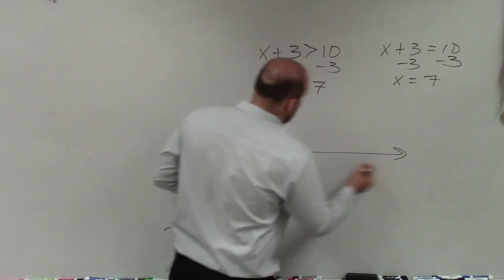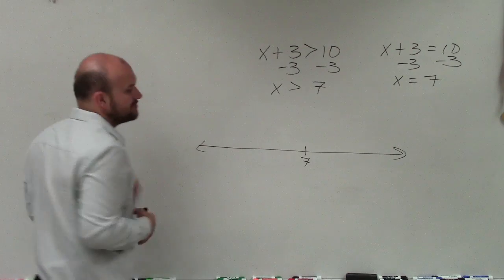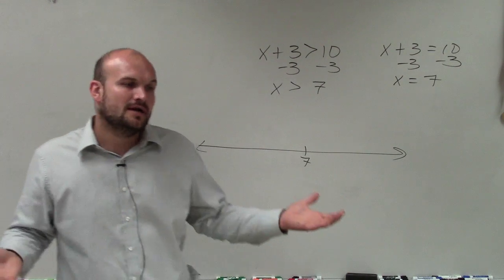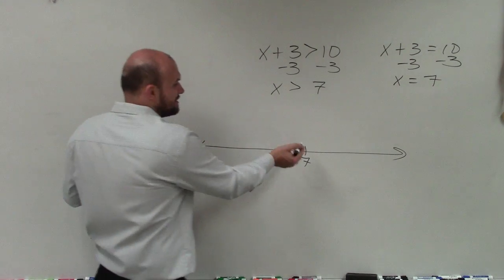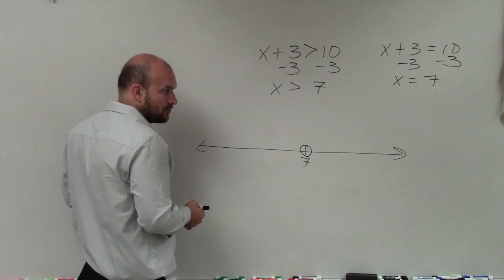So now I create a number line. When I'm creating a number line, I always like to start where my value is, if I have the opportunity. Obviously, I know on your homework and on tests your teacher or the test might not have a number line with your point in the center, but that's OK, you can find it. And what I do is I pick that point and I make an open circle.